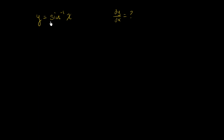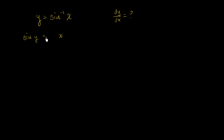So if y is the inverse sine of x, that's equivalent to saying that sine of y is equal to x. So now we have something we're a little bit more familiar with, and now we can do a little bit of implicit differentiation.